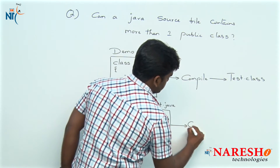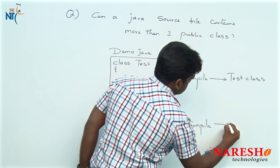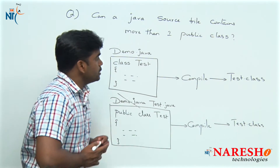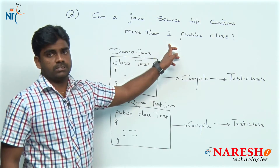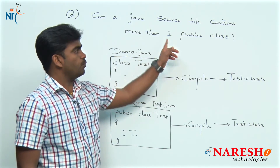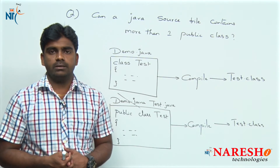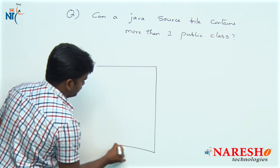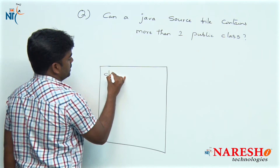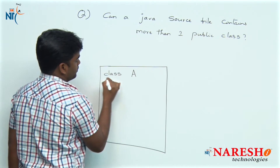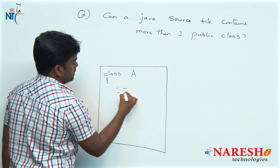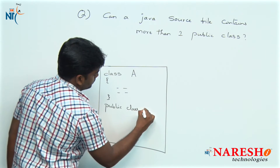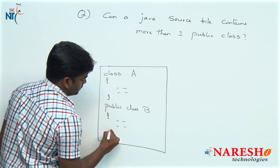Whenever we compile this application, the test.class file will be generated. So now we will see the answer to this question: can we place more than one public class in a single Java source file? Suppose this is a source file — here we are writing two classes: class A and public class B.